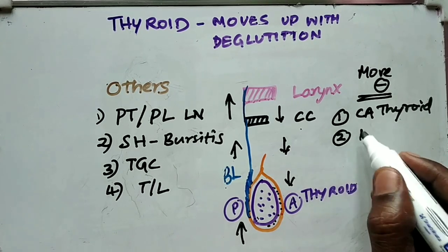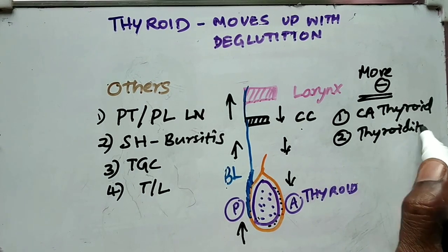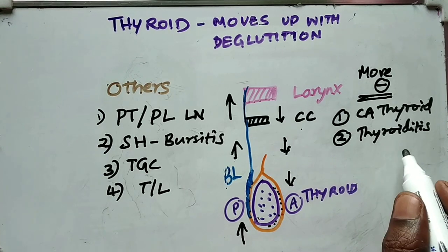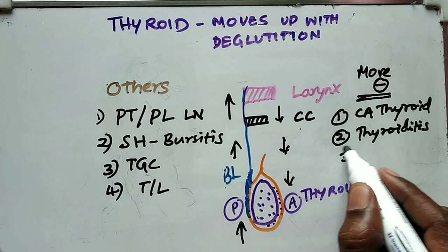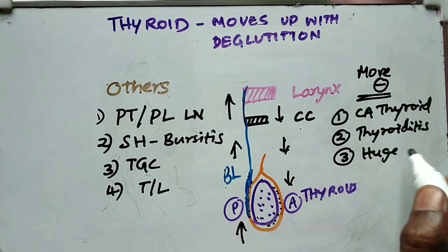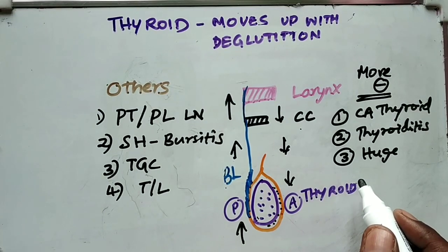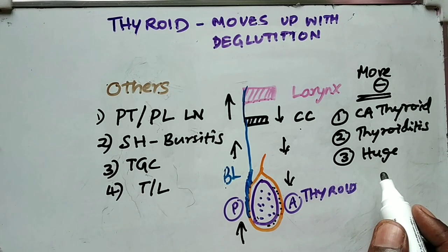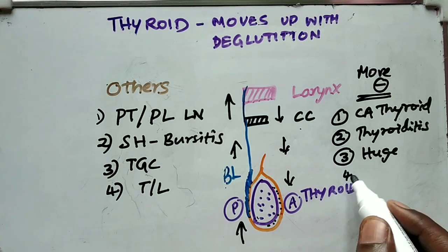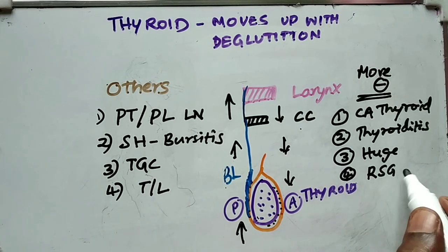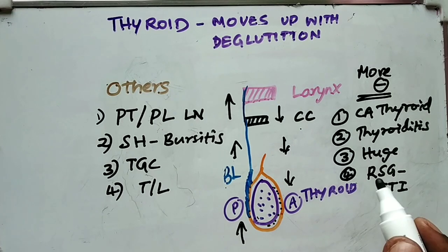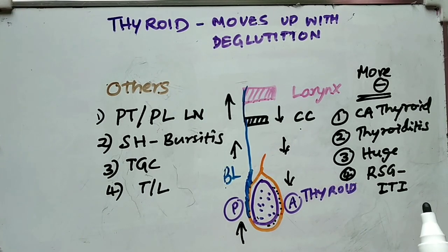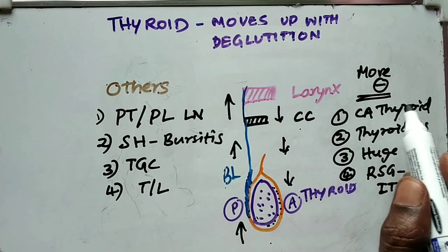Number two is thyroiditis — Riedel's thyroiditis. Here also, as in malignancy, because of the inflammation it will be adherent to the nearby structures. Number three is a huge goiter — because of the large size there is no space to move up and down at all. Number four is retrosternal goiter with intrathoracic impaction. There are many types of retrosternal goiter, but only in retrosternal goiter with intrathoracic impaction will there be no movement at all.